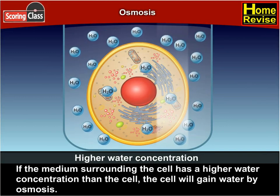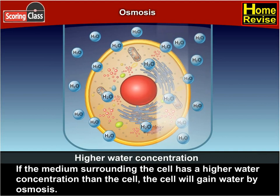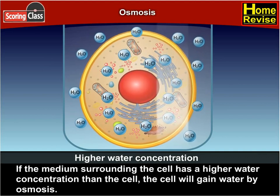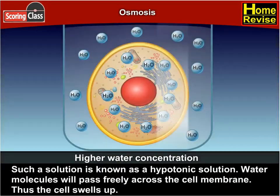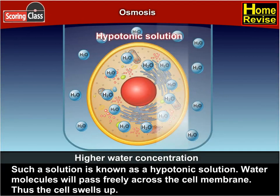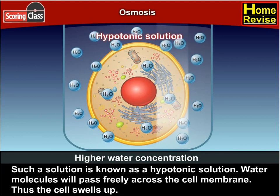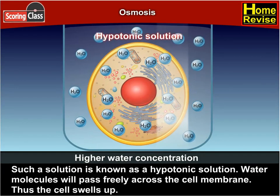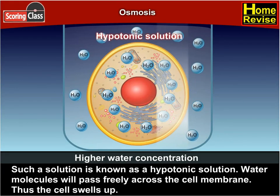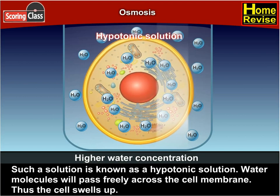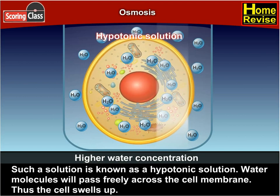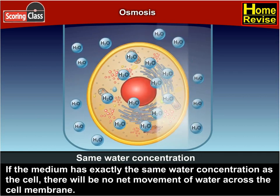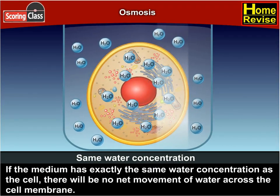First, if the medium surrounding the cell has a higher water concentration than the cell, the cell will gain water by osmosis. Such a solution is known as a hypotonic solution. Water molecules will pass freely across the cell membrane, and thus the cell swells up.